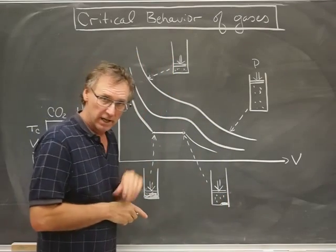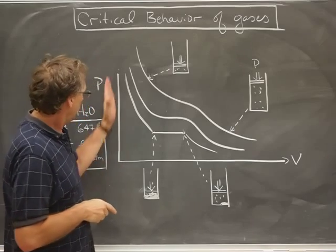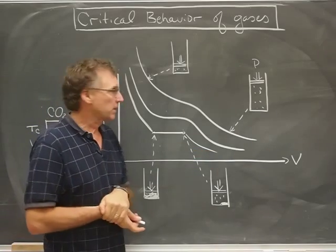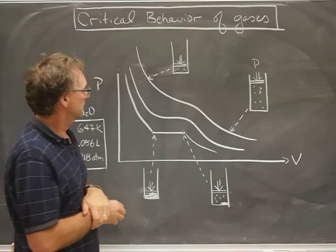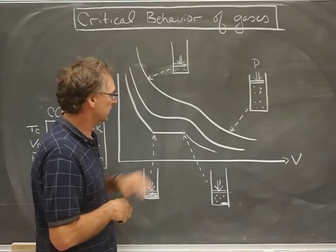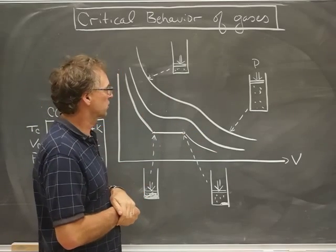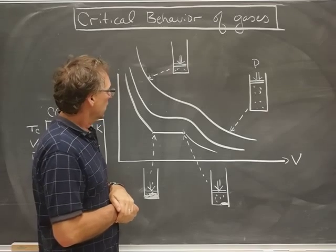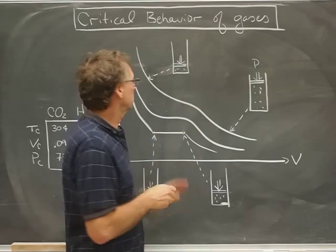we'll start off with an indicator diagram with pressure on this axis, volume on that axis, and I've drawn some isotherms, so these are lines of constant temperature and you're probably accustomed to